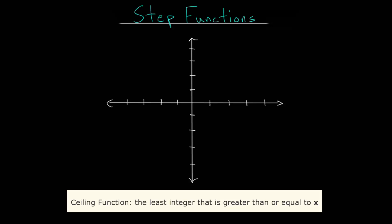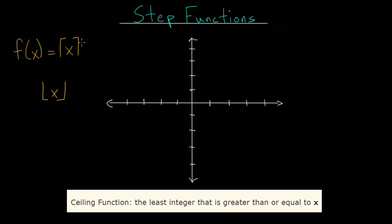In this video I'd like to talk about another particular type of step function which we call the ceiling function. The ceiling function is defined as the least integer that is greater than or equal to X. The usual notation uses brackets with the ceiling part on top with X on the inside, whereas with the floor function the brackets are on the bottom. So when the brackets are up top it's the ceiling function, and when the brackets are down below it's the floor function.